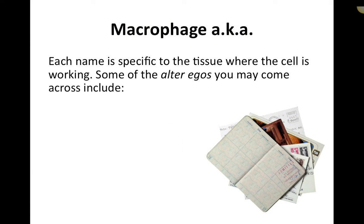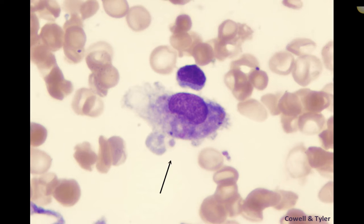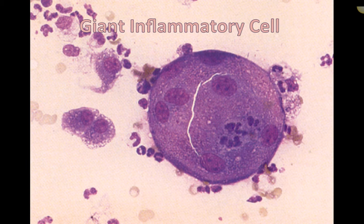Macrophages have different names because each name is specific to the tissue where the cell is working. Their alter egos include histiocytes, mesangial cells, Kupffer cells, and epithelioid cells. Histiocytes are macrophages of connective tissue, mesangial cells are macrophages of the kidney, Kupffer cells are those of the liver, and epithelioid cells are found throughout the body. Here's another macrophage and a giant epithelioid-type macrophage.